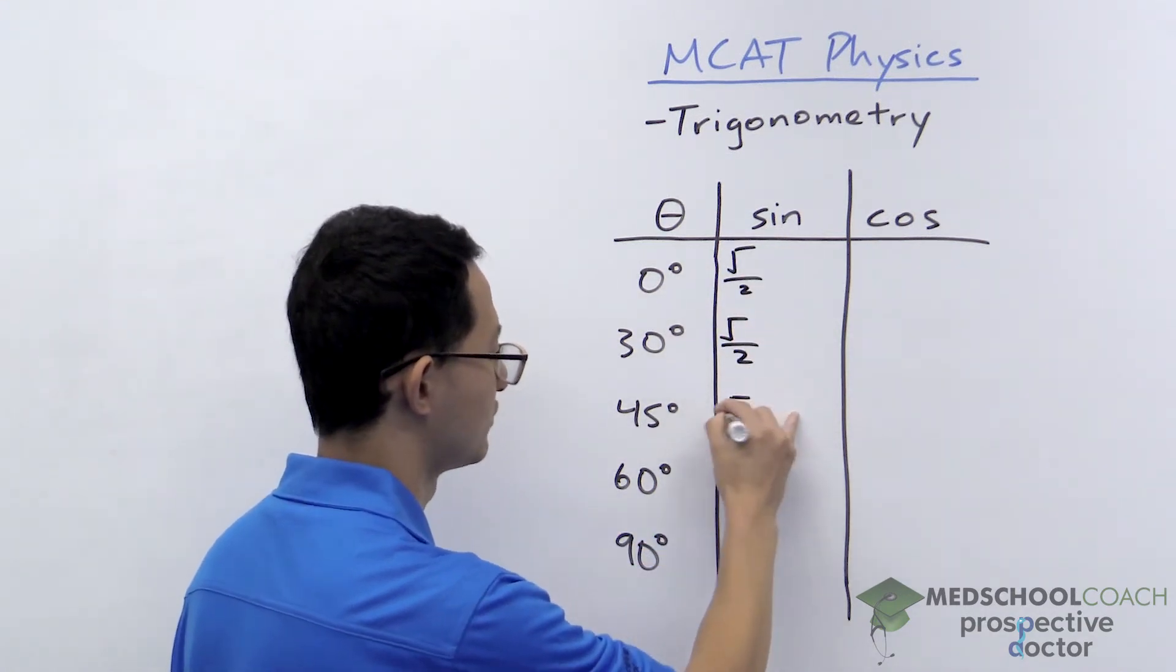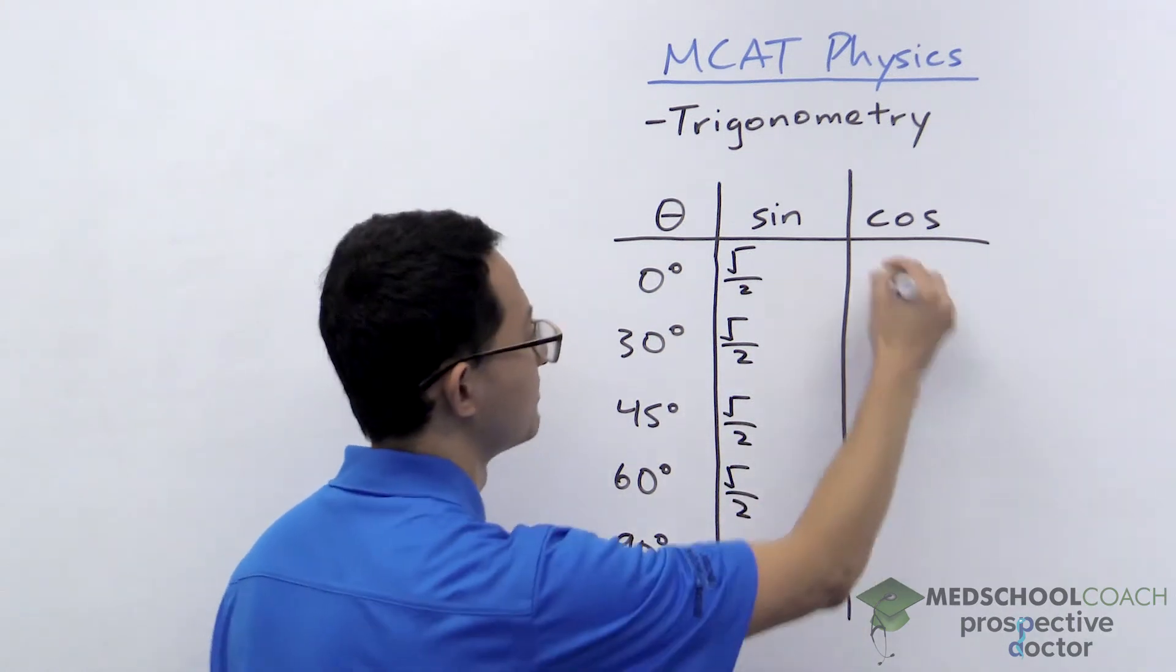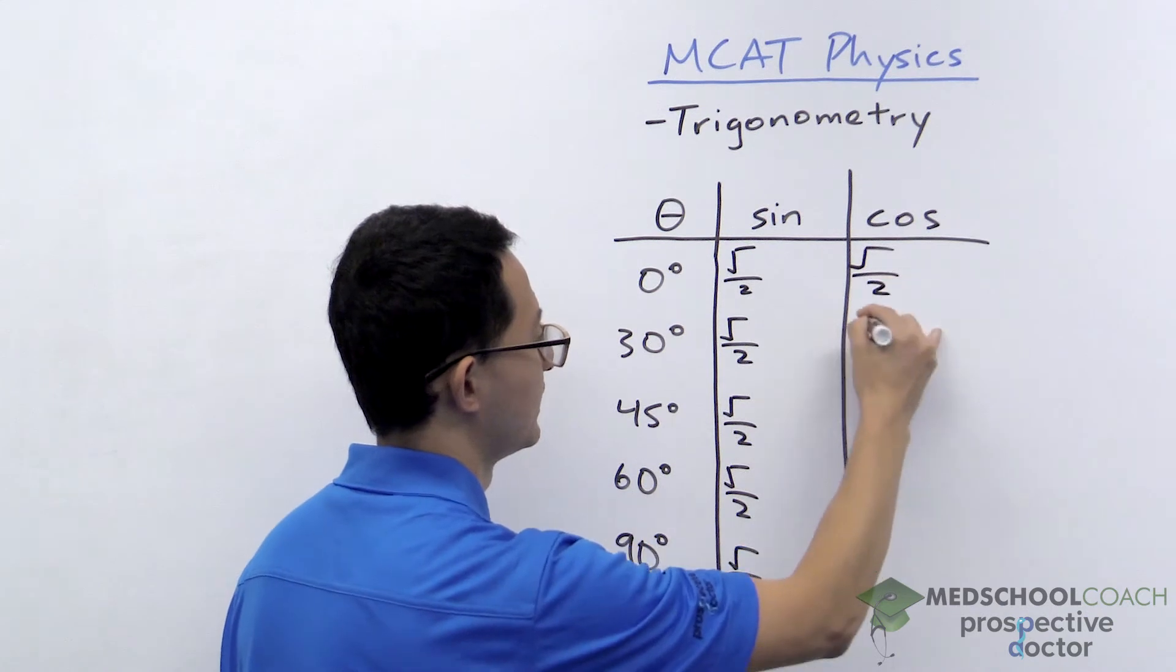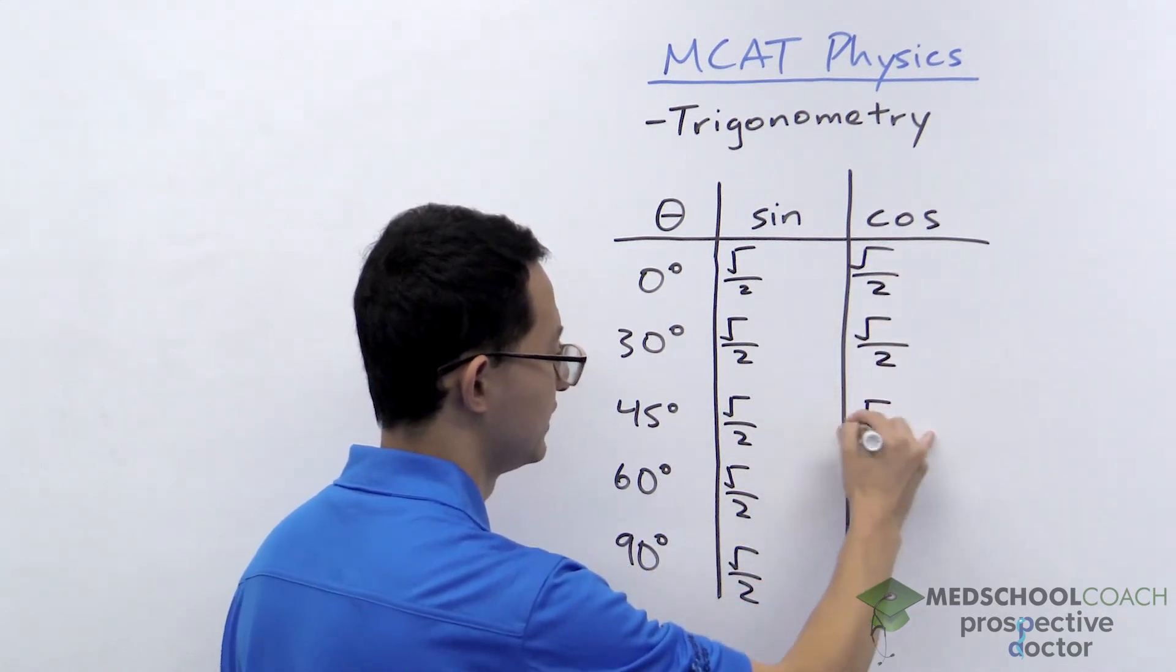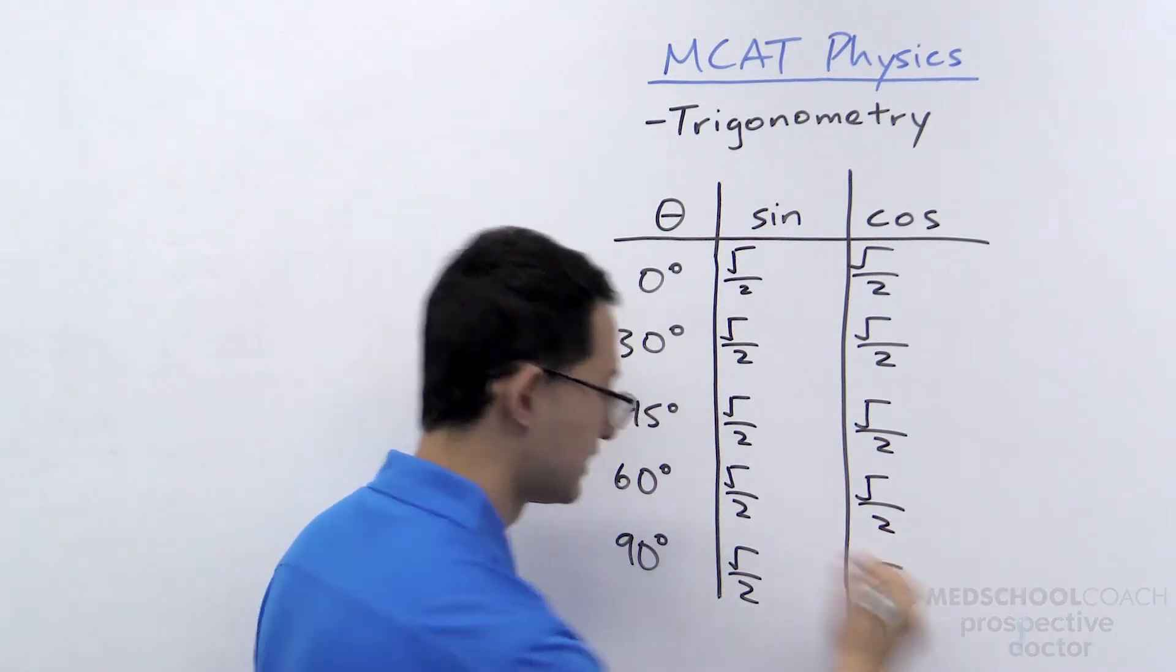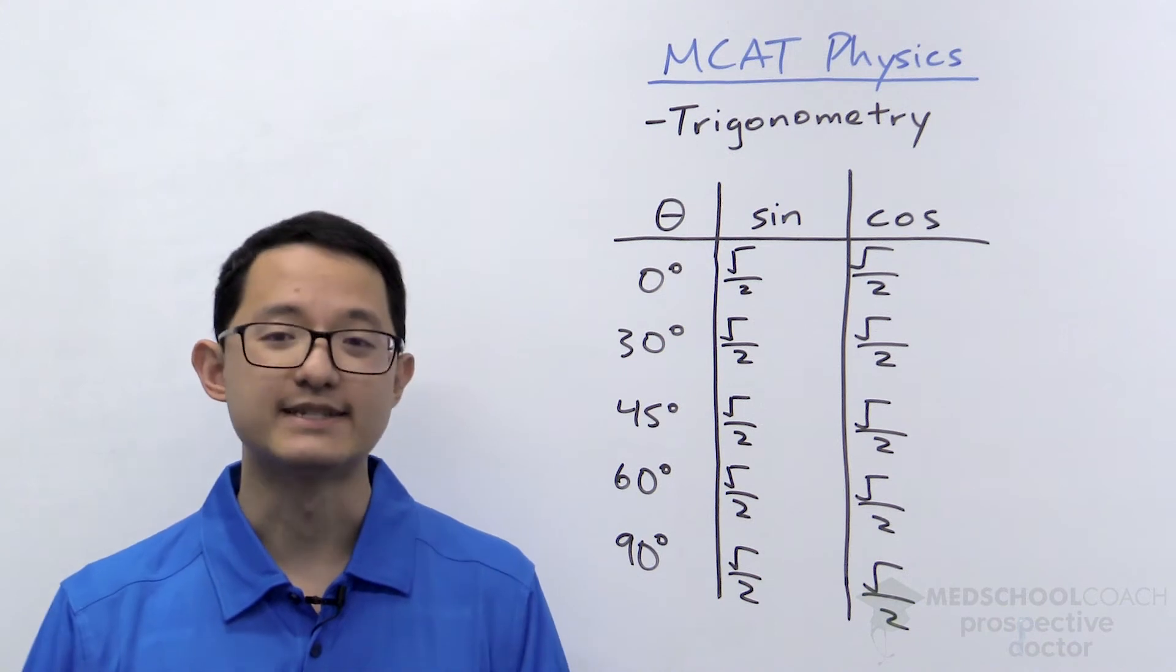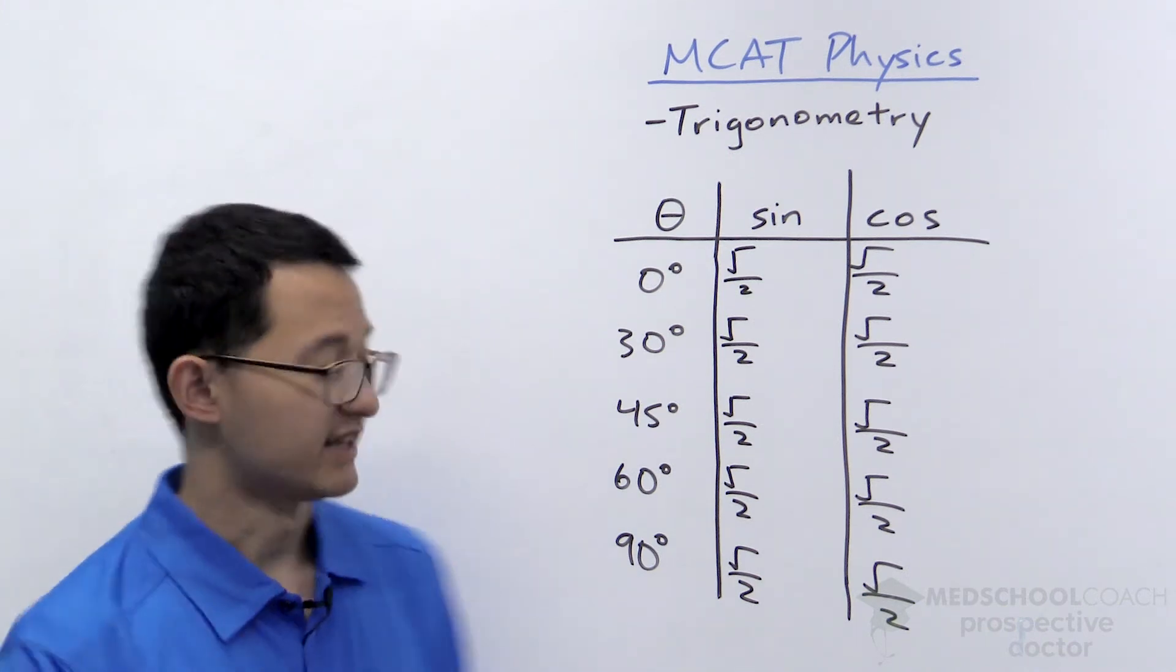All right. Square root of something over 2 for every single term on this board. Square root in the numerator, 2 for the denominator. All right. So once you've done this setup, then all you need to be able to do is count to 4.